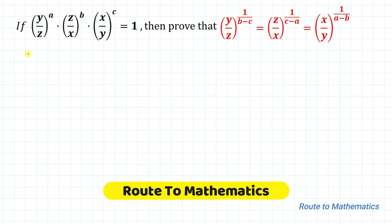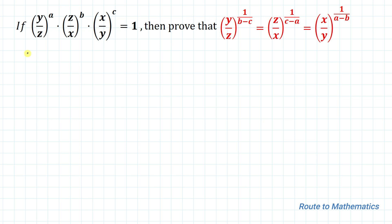Hello everyone, welcome to Root 2 Mathematics. In this video we are going to solve an interesting Olympiad question. The given question is: if (y/z) to the power a, multiplied with (z/x) to the power b, multiplied with (x/z) to the power c equals 1, then prove that...